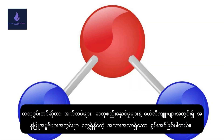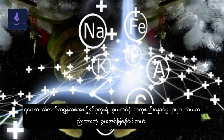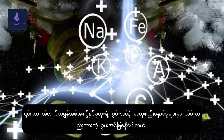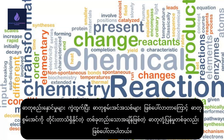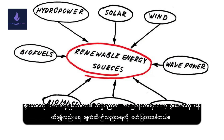Chemical energy is stored in atoms. It is the potential energy found in chemical bonds and within the atomic particles in molecules. It can be both the energy of electron arrangement and the energy stored in chemical bonds. A chemical reaction occurs when chemical bonds are broken and new chemical energy is formed.